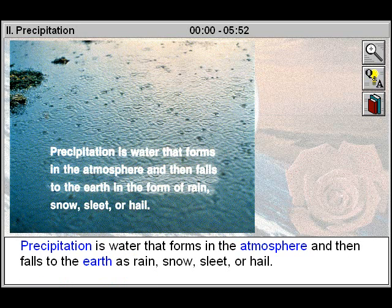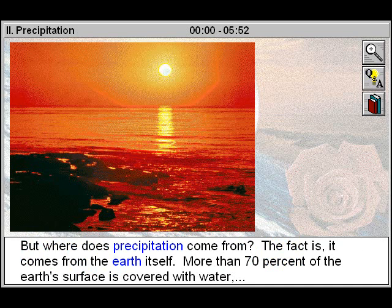Precipitation is water that forms in the atmosphere and then falls to the Earth, as rain, snow, sleet, or hail.